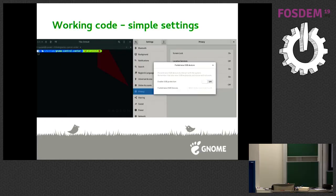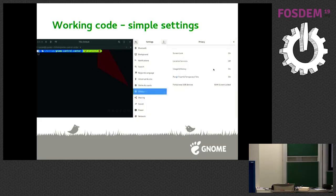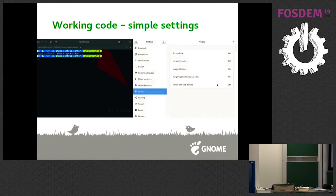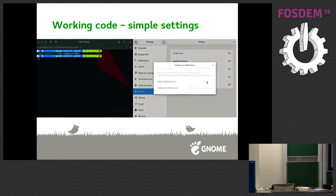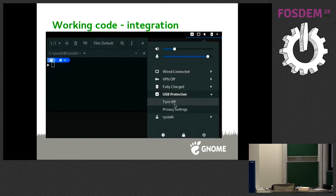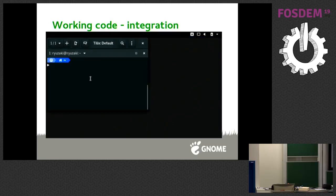In the backend we use USBGuard. It checks if USBGuard is currently available on your system, and if it's not, you cannot turn on the protection. We also show an icon in the top bar letting the user know that USB protection is currently active. If USBGuard is not available or protection is not active, we don't show the icon.